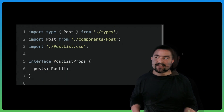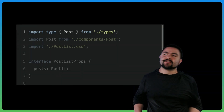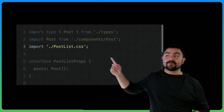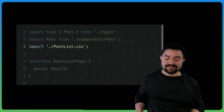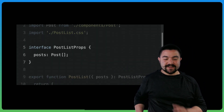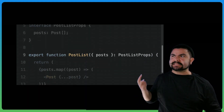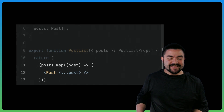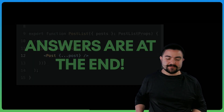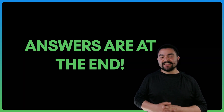Let's look at each line of code. Line one is importing a post type — but what else is happening on that line? Line two, we're importing a post component. What's happening there? Line three, we're importing some CSS — I bet some of you are going to get this wrong. Lines five through seven are defining the PostListProps interface. What is that? Line nine has at least three different things going on, and then we've got lines 11 through 13 and also line 12. The answers for what each of those things are will come at the end.